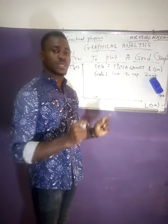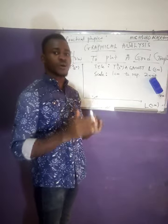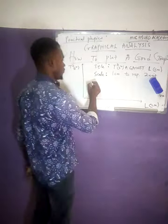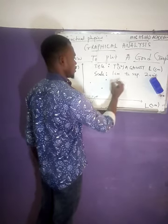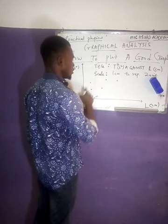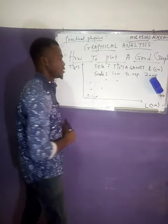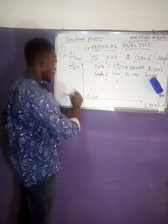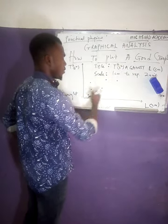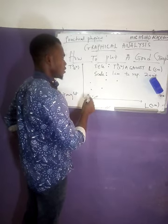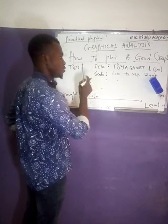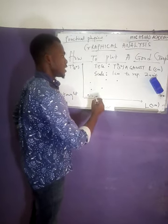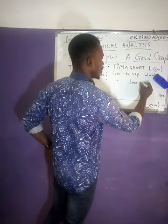Once you are done with the axes, the next thing is fitting in your data points on the graph. I've also made a tutorial video that will help you fit in your points along with choosing your scale. Once we have fitted in our data points, for a straight line graph we draw a straight line that passes through as many points as possible, and the points that do not fall on the line should be very close to it. That line is what we call the line of best fit.